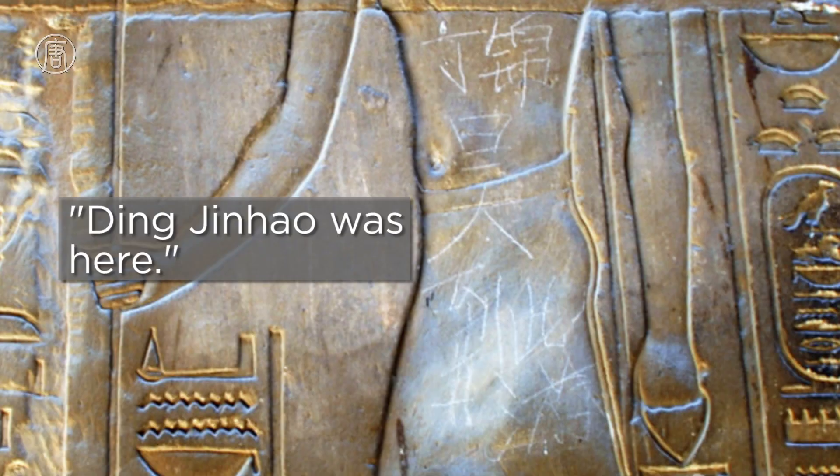Wow, this must be new archaeological evidence that the ancient Chinese traveled to Egypt. No, actually it's graffiti, and it reads, Ding Jin Hao was here.